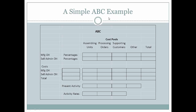This is a simple ABC example of a cabinet maker. For this cabinet maker we have four cost pools: assembling units, where the cost object will be the products; processing orders, where the cost object will be the products; supporting customers, where the cost object will be the customers; and other, the cost object of which will be organizational sustaining types of activities.